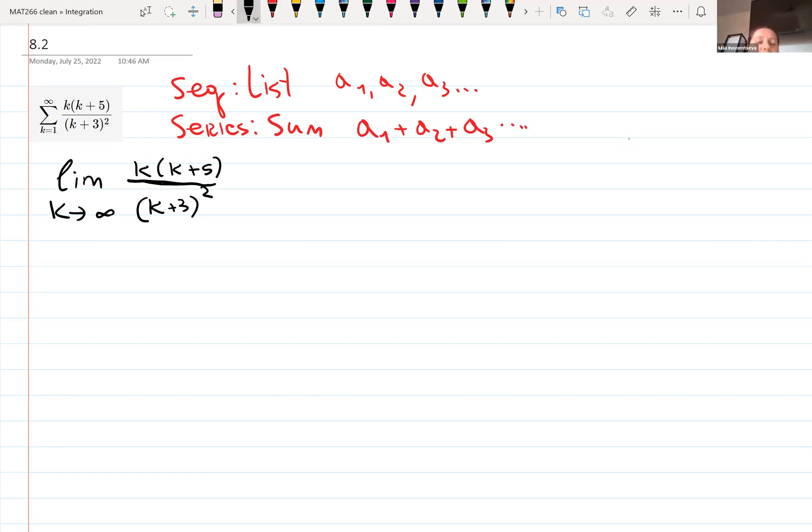For sequence, the limit will be enough to know the convergence or divergence. For the series, it's not enough. But we still start with the limit. It's just a convenient way to start the problem, even for series.